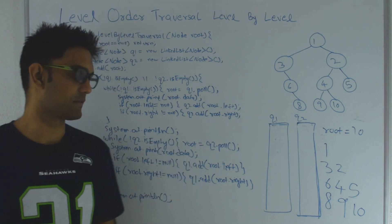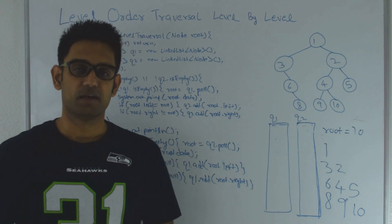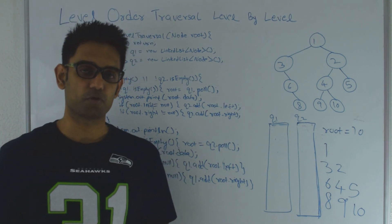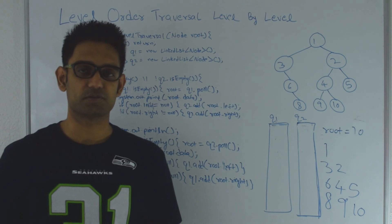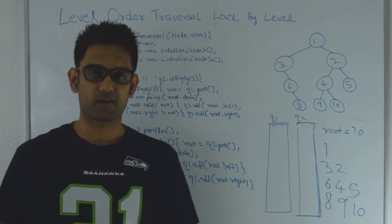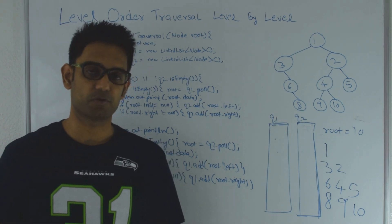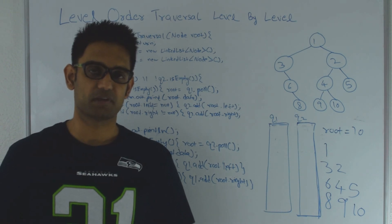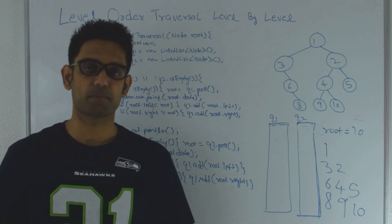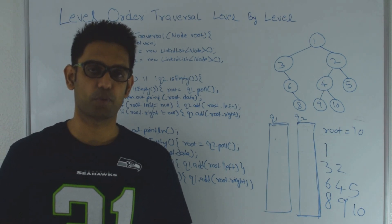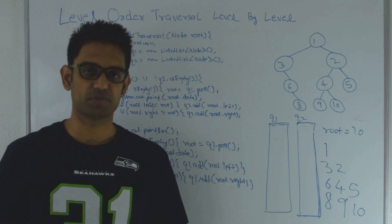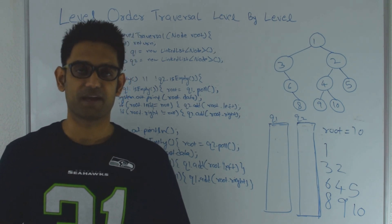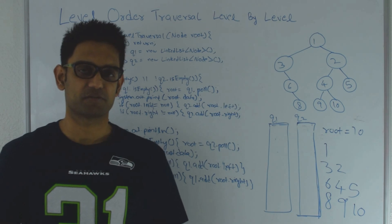So this is my solution for two queues. If you want to check out the solution for one queue with a counter or one queue with a delimiter, go to my GitHub link: github.com/mission-peace/interview-wiki. If you want to check out similar questions, go to my YouTube channel. Thanks for watching this video.